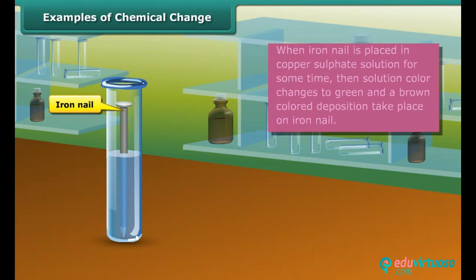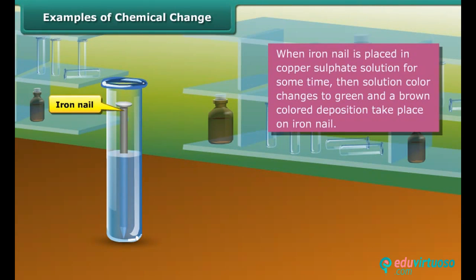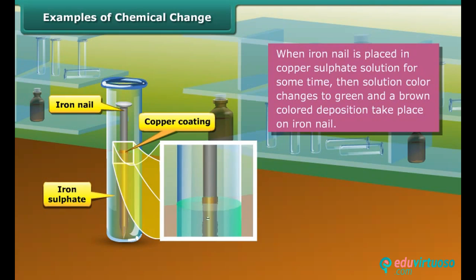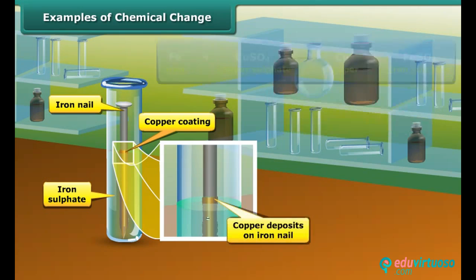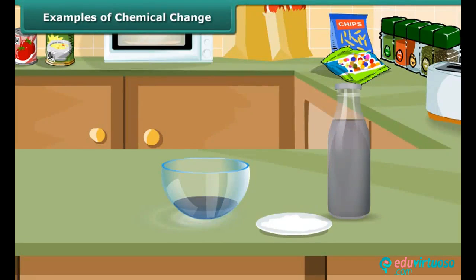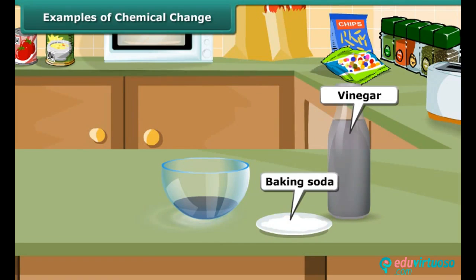You will see a blue colored solution. Put an iron nail in it — after some time the color of the solution changes to green and the nail is covered by brown foam. These changes are due to the formation of iron sulfate solution and copper.